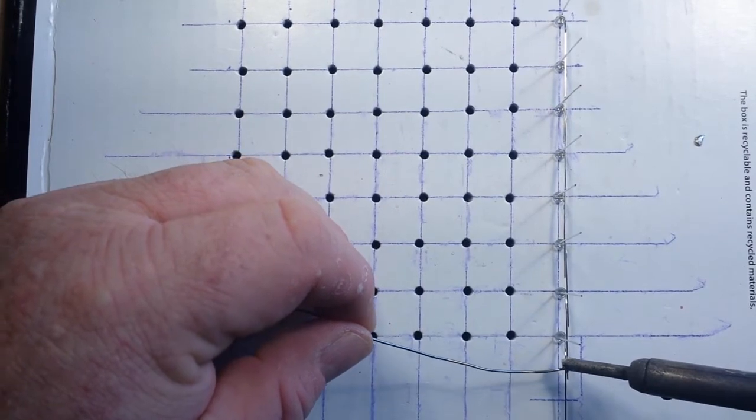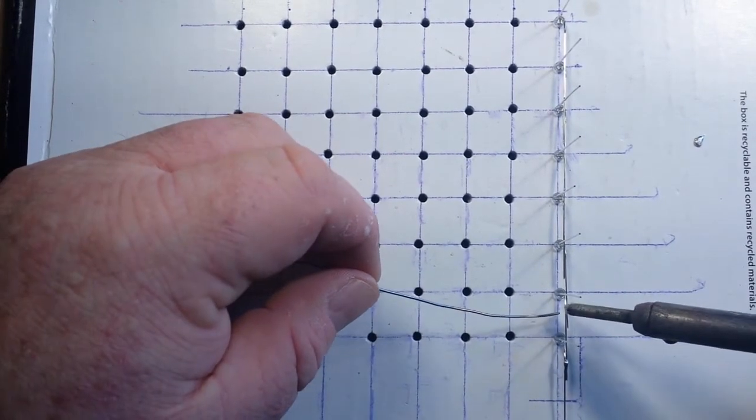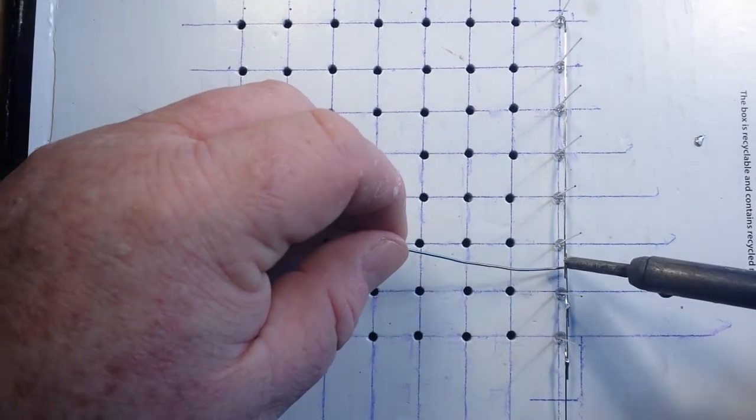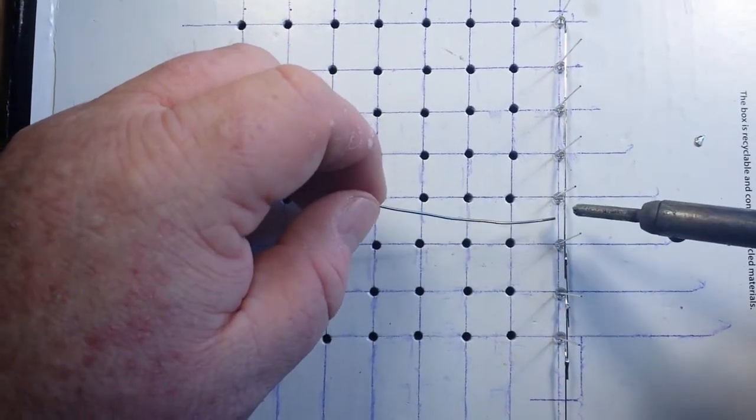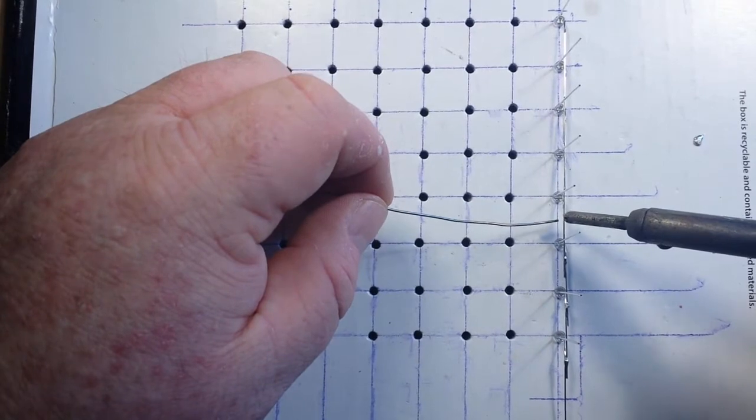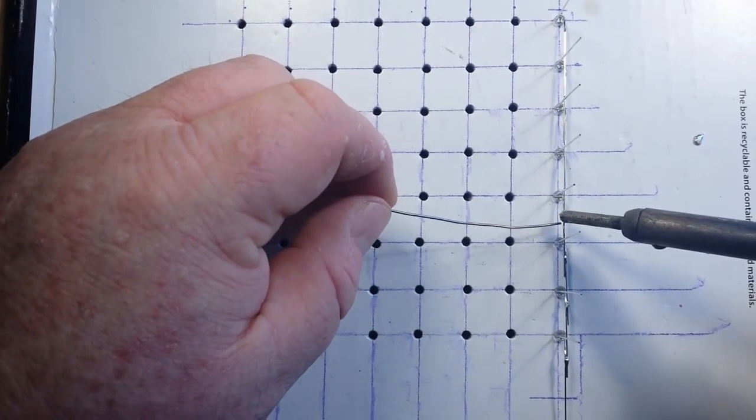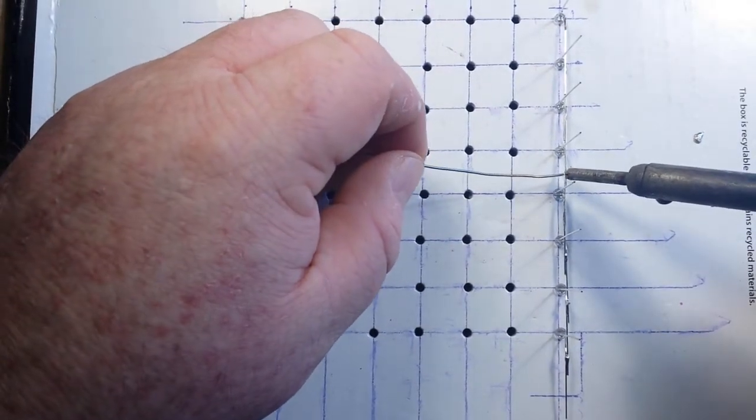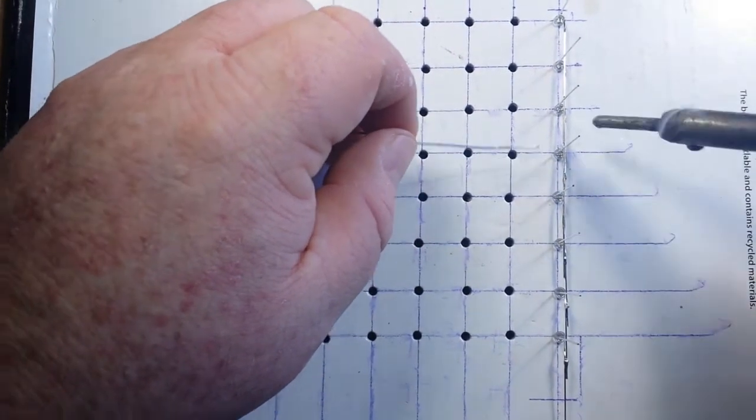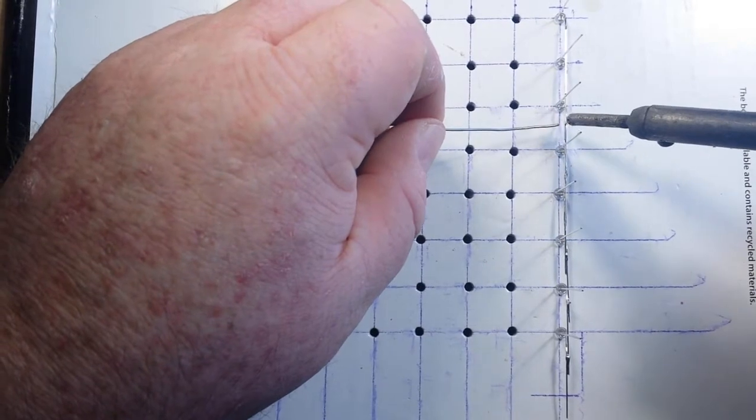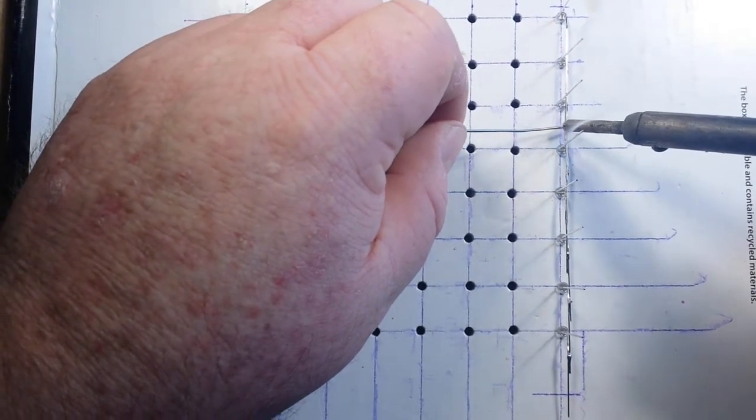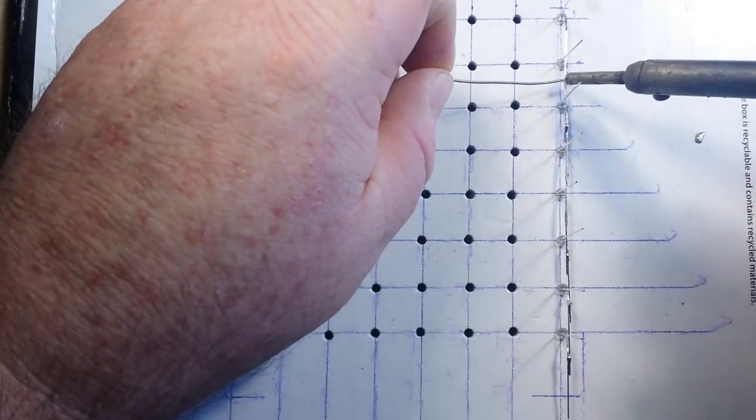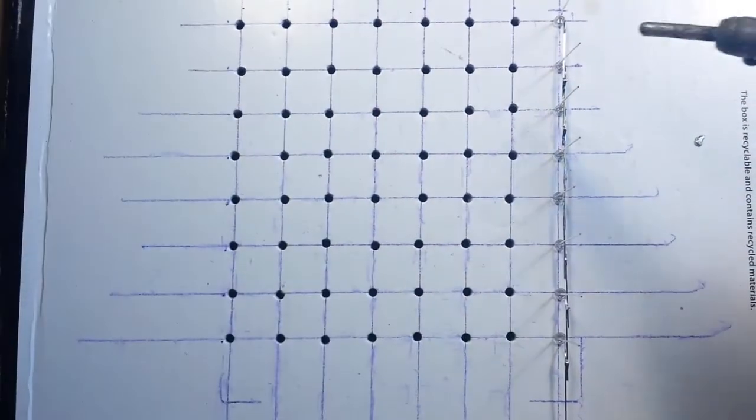So we get a little solder on the iron, touch them, and they're soldered. I mean, if you spend the time to line them up, this part will go really quickly. See, there's the first row done.